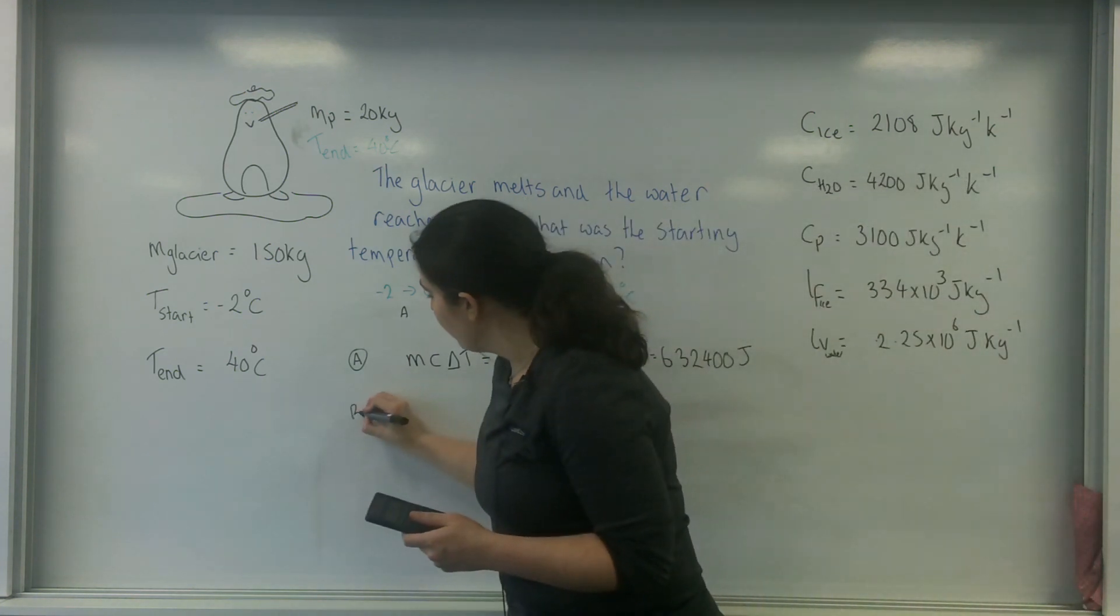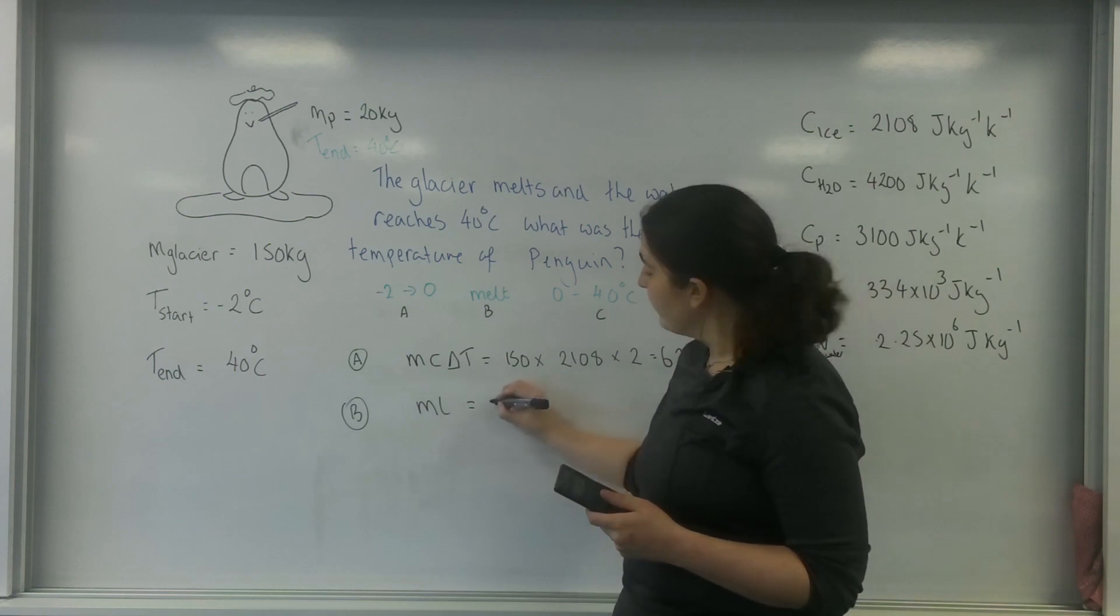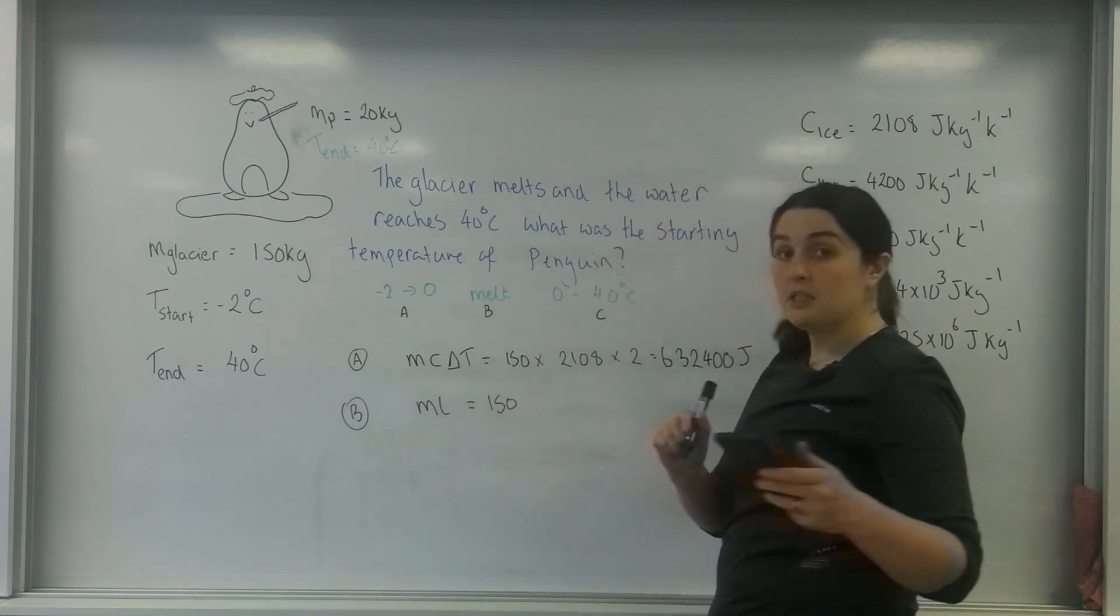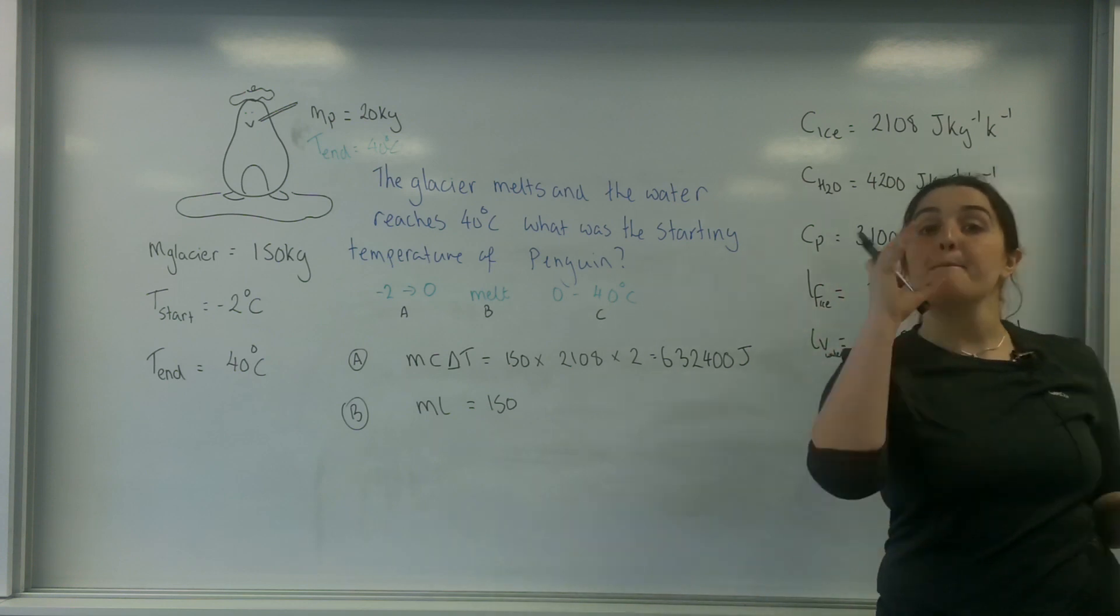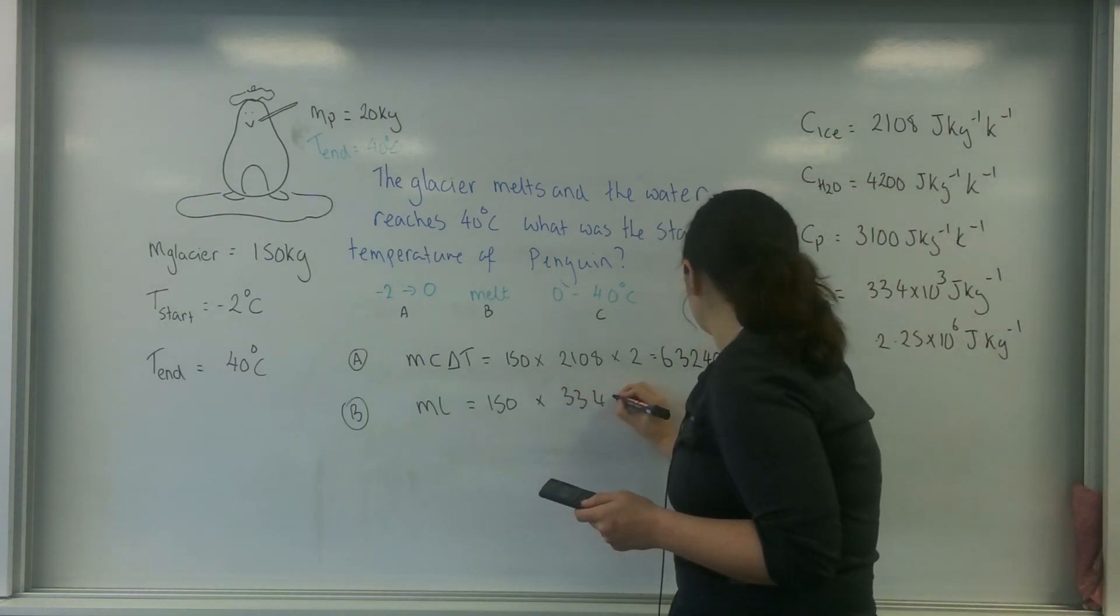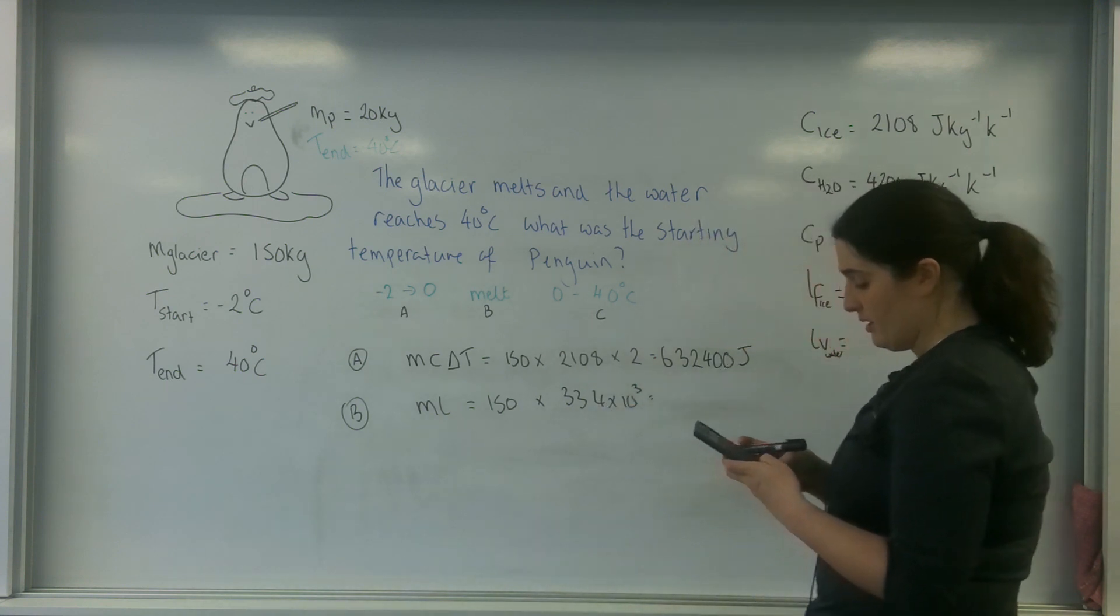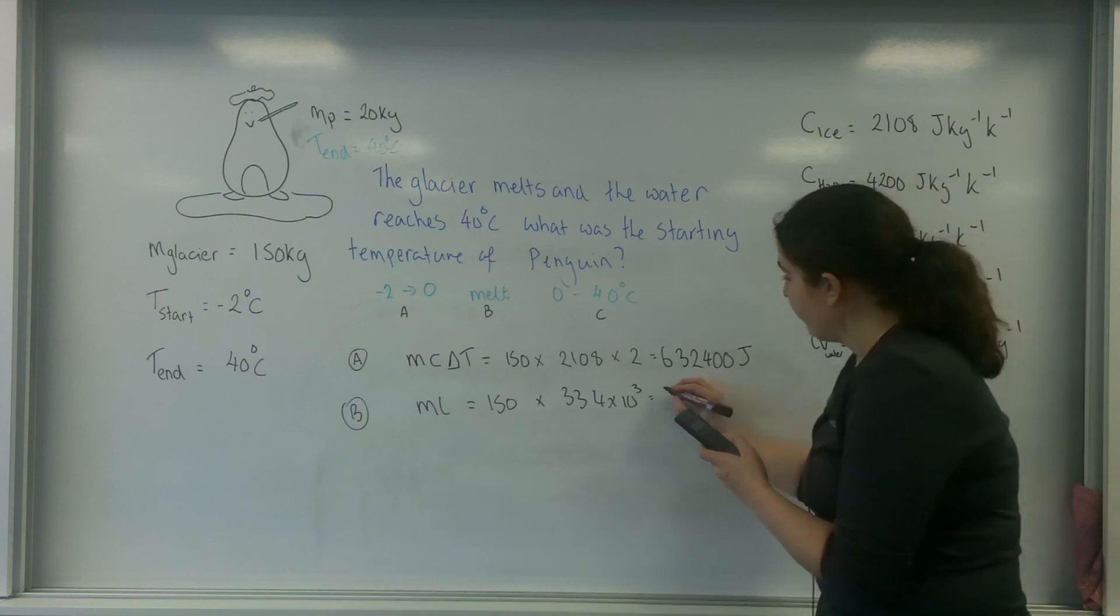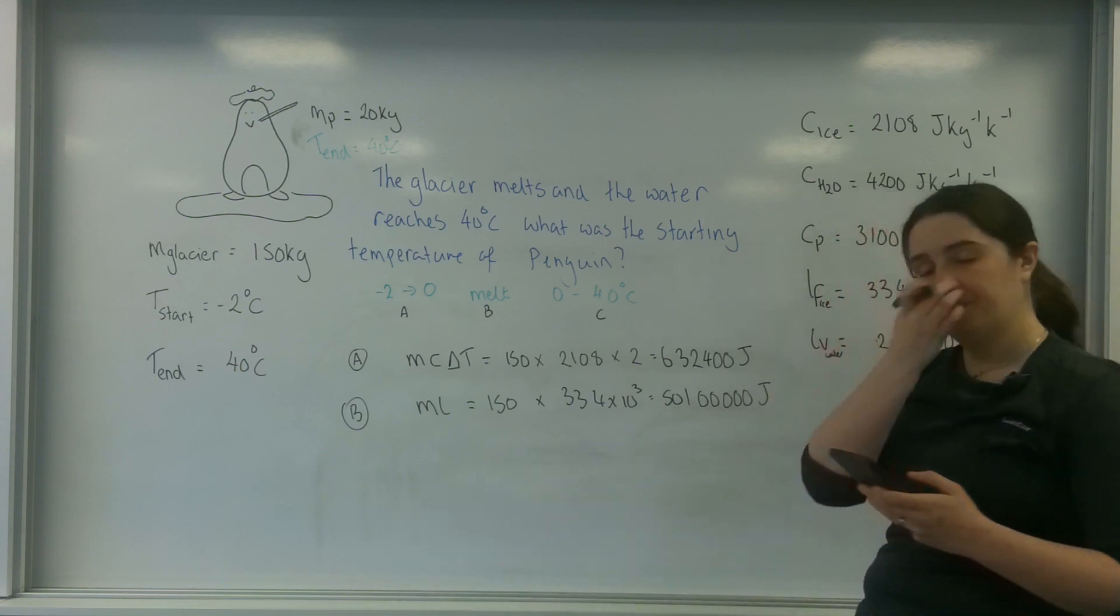So I'm now going to melt. So I'm going to be using ML. And that's going to be 150 times by the latent heat of fusion because I am melting. So that's going to be 334 times 10 to the 3. And that's going to be 50,100,000 joules.